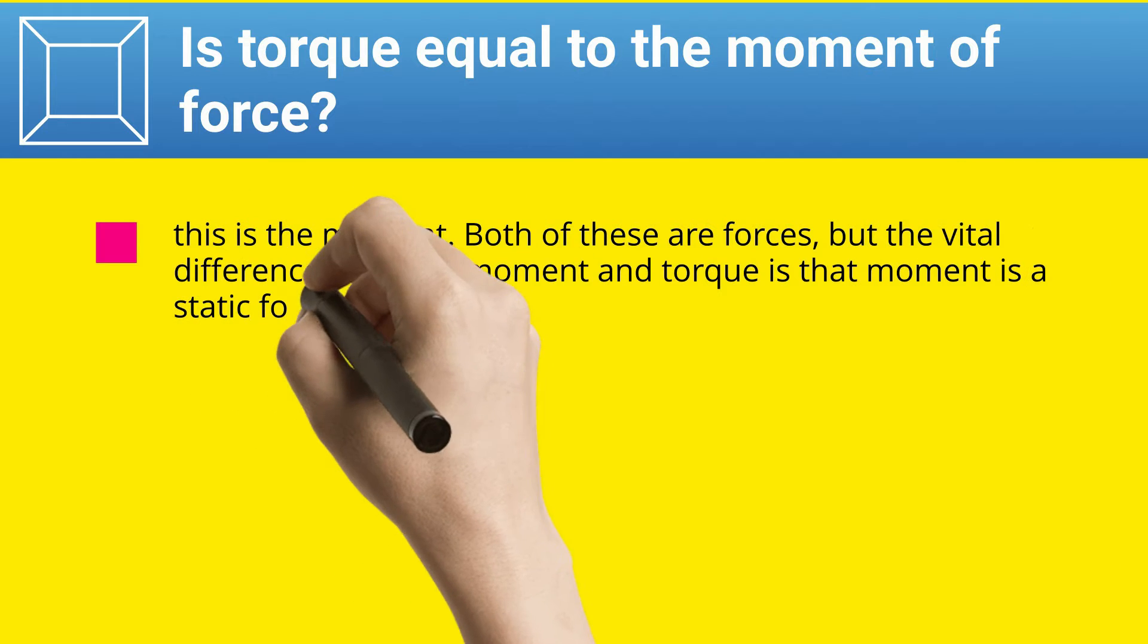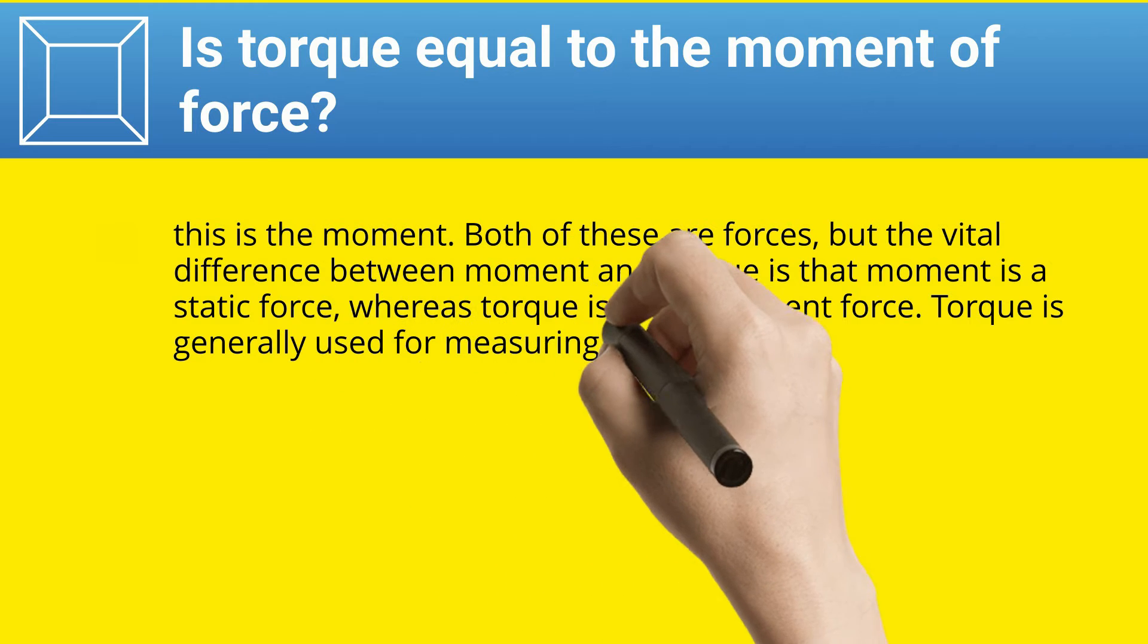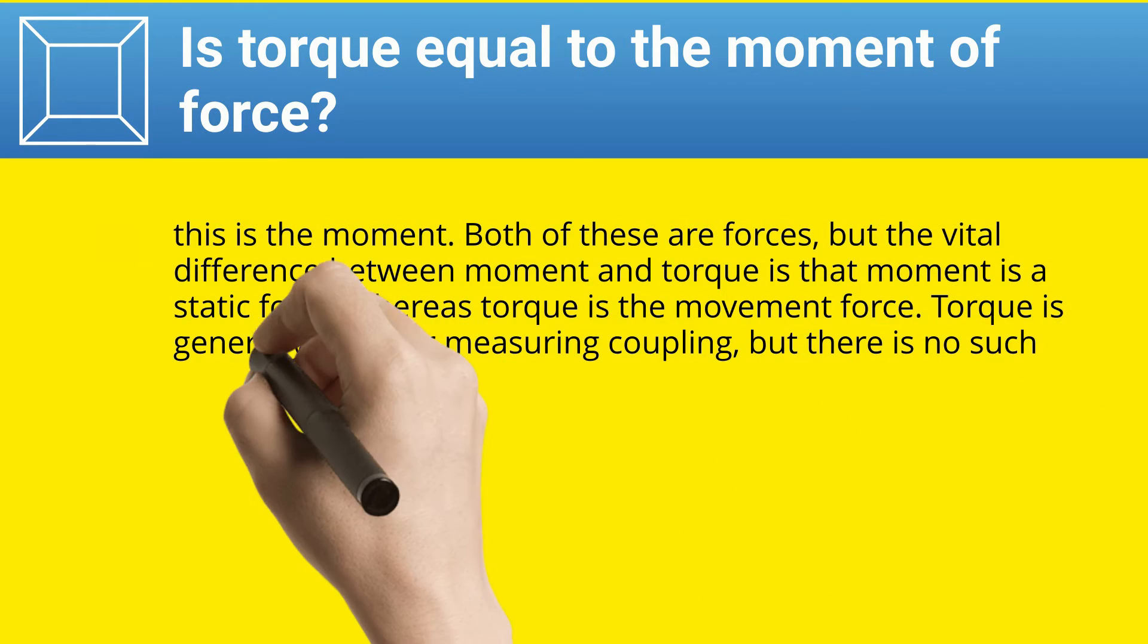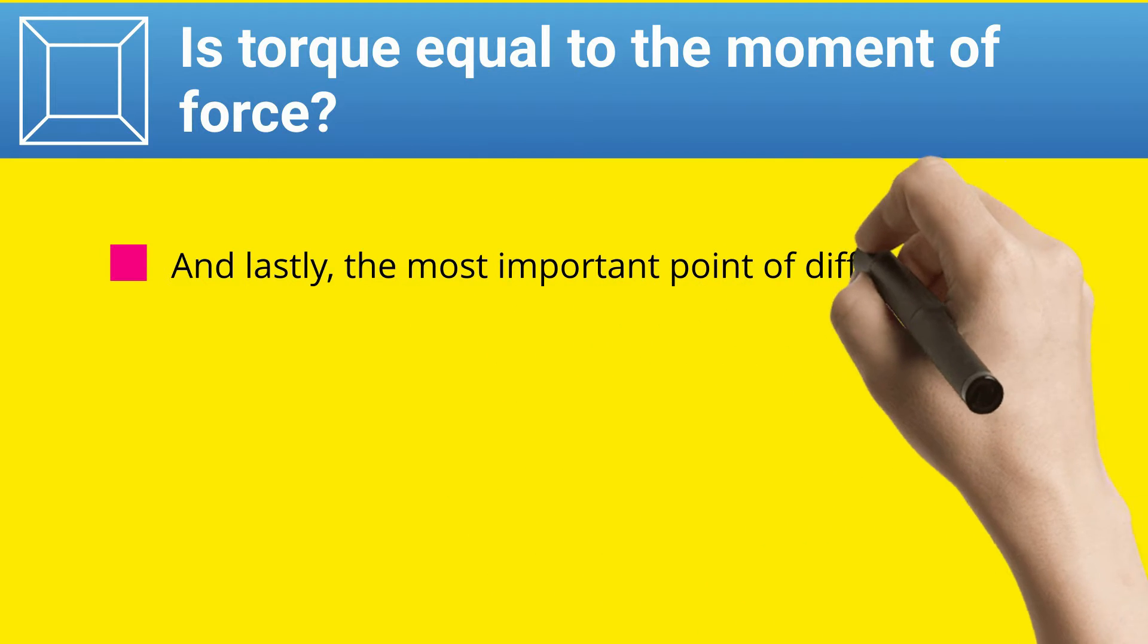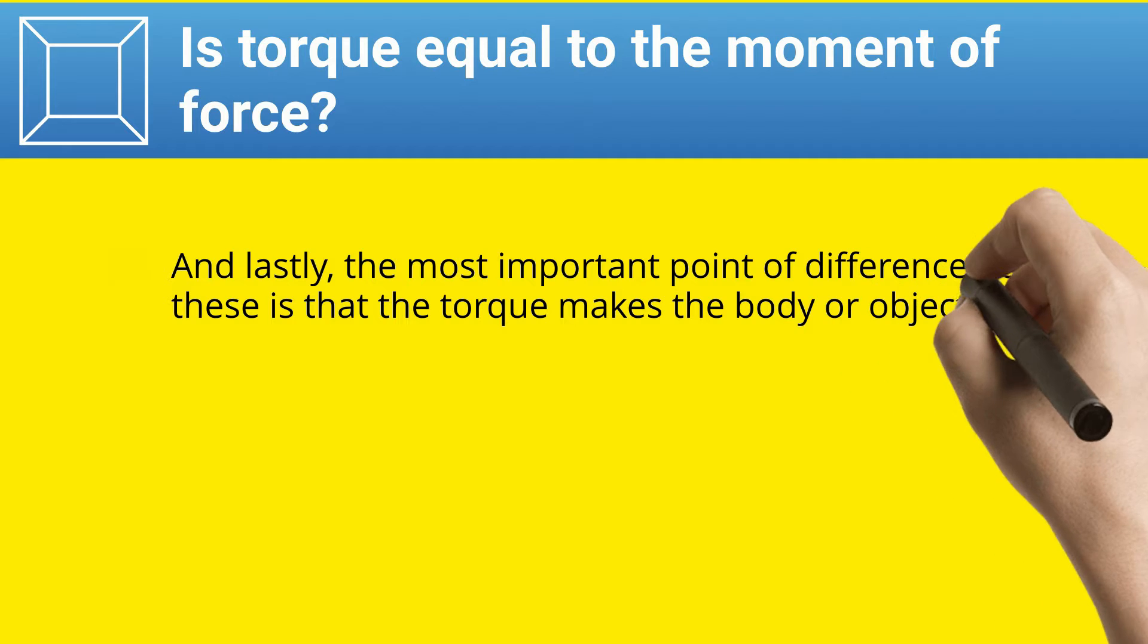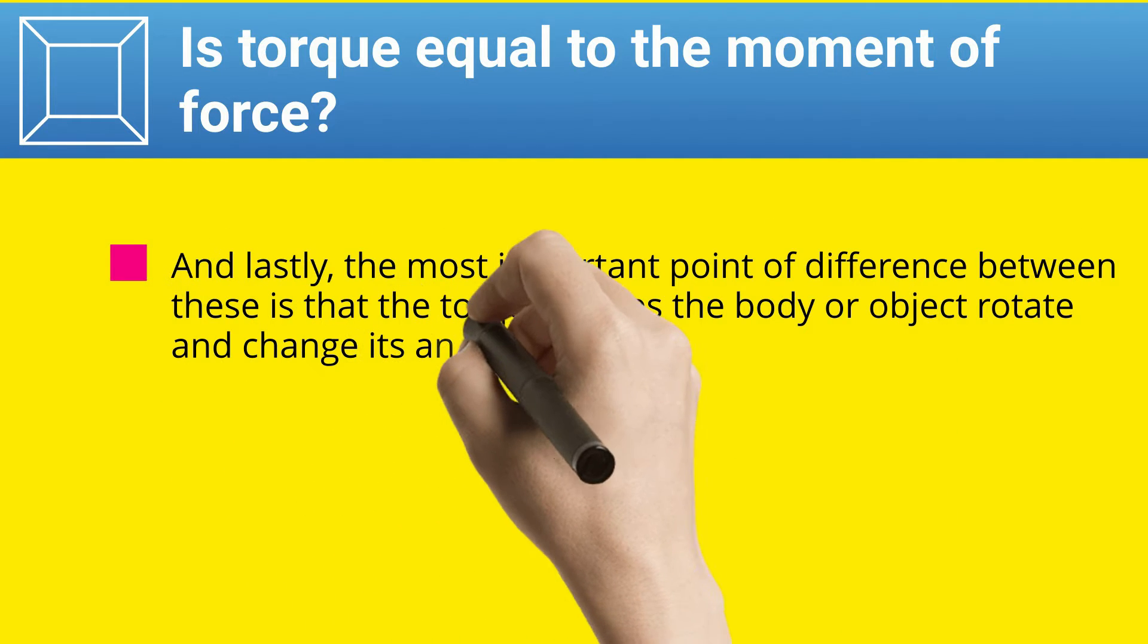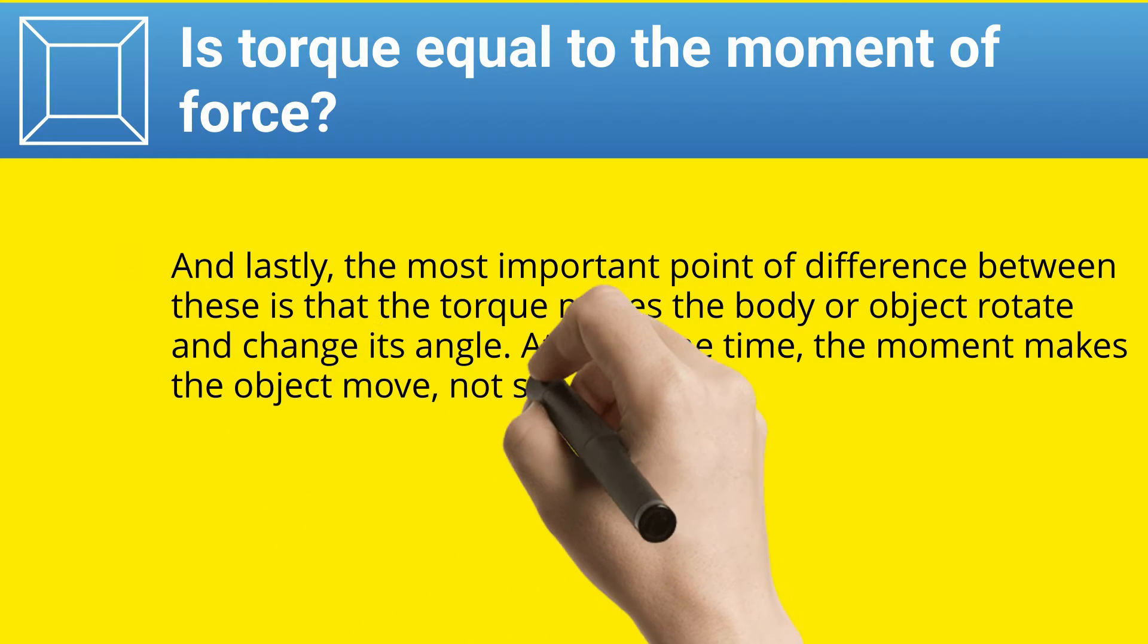Torque is the movement force. Torque is generally used for measuring coupling, but there is no such use of the moment. And lastly, the most important point of difference between these is that the torque makes the body or object rotate and change its angle. At the same time, the moment makes the object move, not specifically rotate.